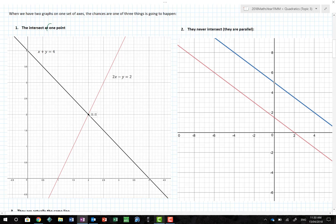One is they intersect at only one point. I have x plus y equals 4 and 2x minus y equals 2. When I graph them, they intersect at one point, which tells me the solution would be x equals 2 and y equals 2. Your answer should always be coordinates.